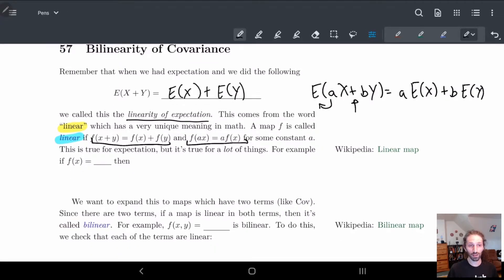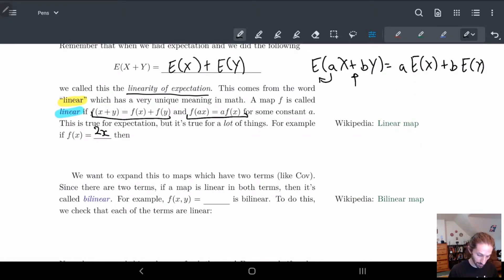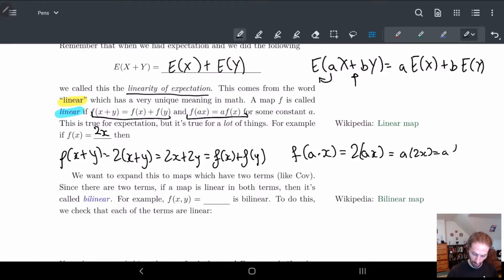But this is true for a lot of things. So if I have for example I have a function 2x like some map 2x well this is true for this as well right so if I do f of x plus y well this is 2 of x plus y this is 2x plus 2y which is equal to f of x plus f of y. This is also true with the constant right so if I do a times x well this is 2 times 2 of a x I can just commute these variables a times 2x so I have a of f of x.